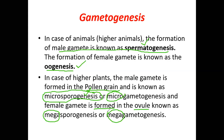In lower plants, reproduction begins in the form of spores, which is why the process is called sporogenesis. Microspores and megaspores are essentially the male and female gametes respectively in these plants.